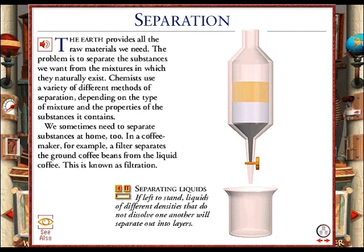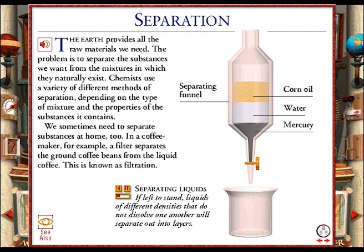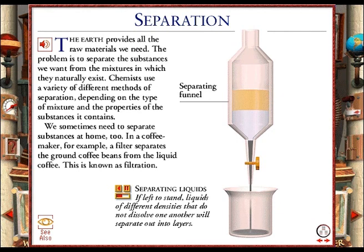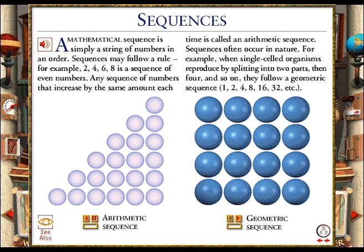A mixture of liquids that do not dissolve in each other is placed in a separating funnel and allowed to stand so that the different liquids form separate layers. Opening a tap in the funnel stem allows the bottom layer, which is the most dense liquid, to run slowly out of the funnel and into a collection vessel placed underneath. As soon as all of this first liquid has been collected, the tap is closed. This process is then repeated for each liquid using a new collection vessel for each one.